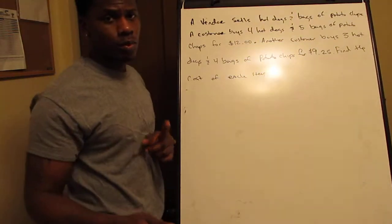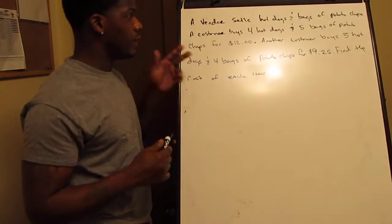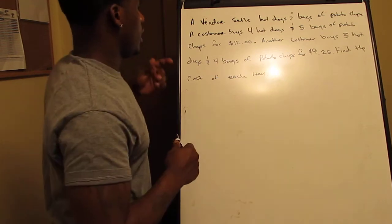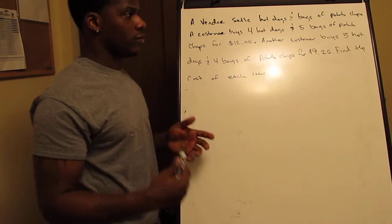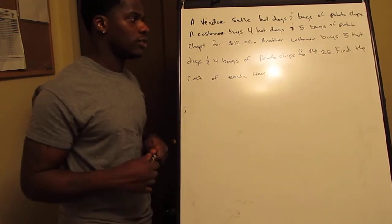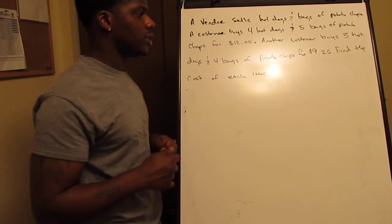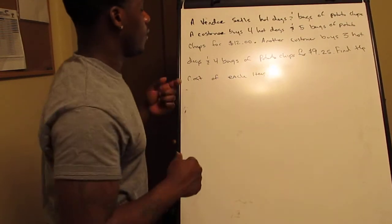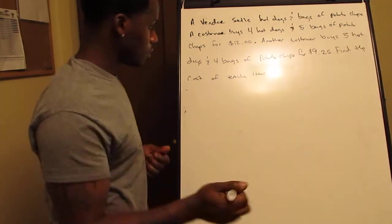Question number one: a vendor sells hot dogs and bags of potato chips. A customer buys four hot dogs and five bags of potato chips for $12. Another customer buys three hot dogs and four bags of potato chips for $9.25. Find the cost of each item.